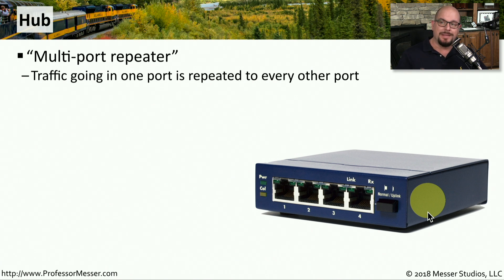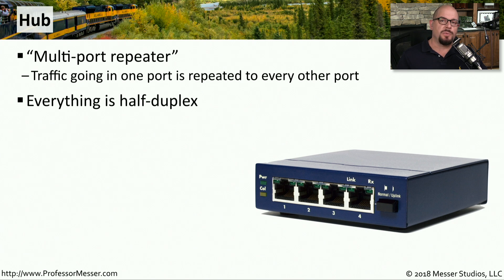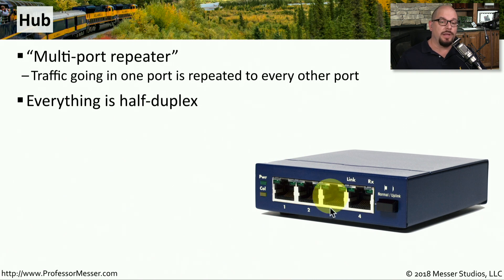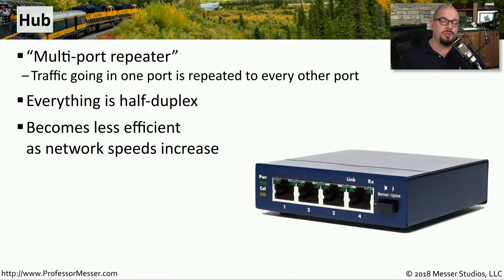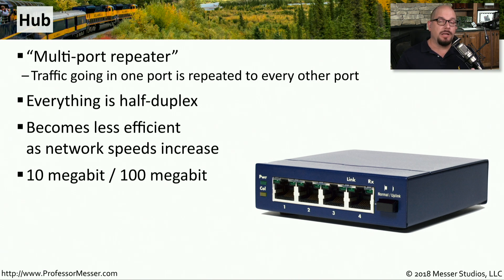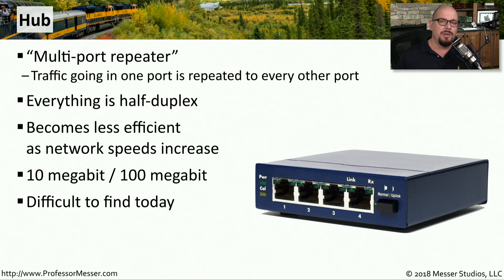You'll sometimes hear a hub referred to as a multi-port repeater. Communications on a hub occur at half duplex, meaning two devices can't communicate at the same time — one device sends traffic, and once it's done, another can begin. As more devices communicate, network efficiency decreases. Ethernet hubs only operate at 10 or 100 megabits per second. You won't find any gigabit speed hubs, and in fact it's hard to find 10 or 100 megabit hubs today because the technology doesn't scale.